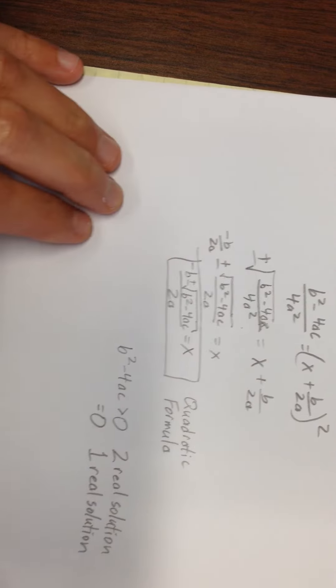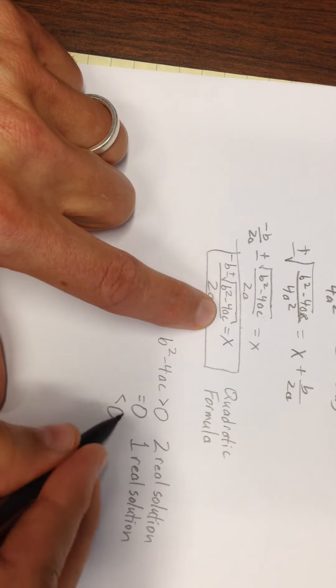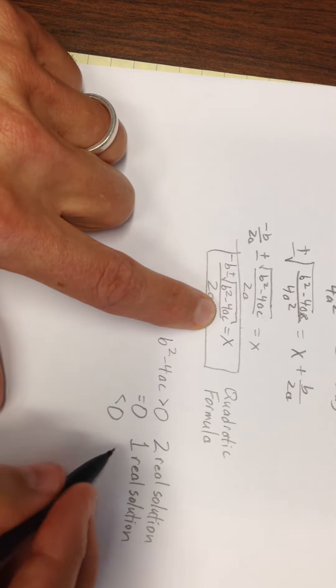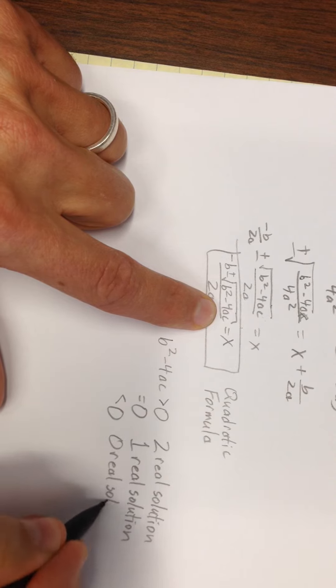Now depending on whether you like complex numbers or not, if this under the square root happens to be less than 0, you could either say I have 0 real solutions, that would be true,